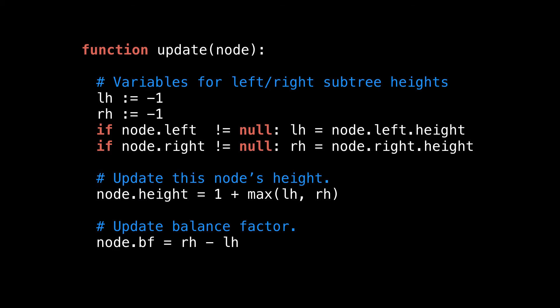The update method updates the balance factor and height values of our node. So to calculate the height of the node, we get the maximum height of the left and the right subtrees and then add one. Notice that I initialize the left and the right subtree heights to be minus one. This is because it will cancel out with the plus one with the max function in the case where the node has no subtrees, giving the correct height of zero for leaf nodes. Lastly, I update the balance factor for this node by finding the difference between the right subtree and the left subtree heights.